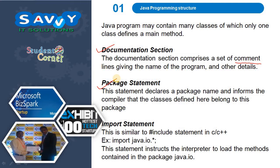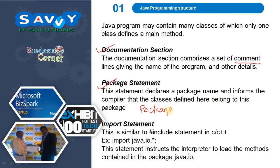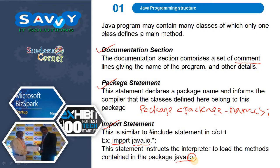The next one is the import statement. This is similar to the hash include statement in C or C++. For example: import java.io.*. This statement instructs the interpreter to load the methods contained in the package java.io — where io means input/output. The dot star indicates that all classes and interfaces are imported.